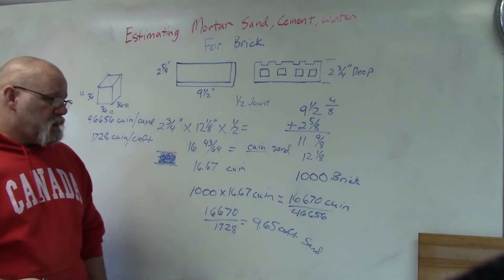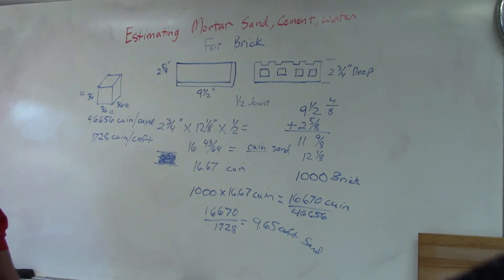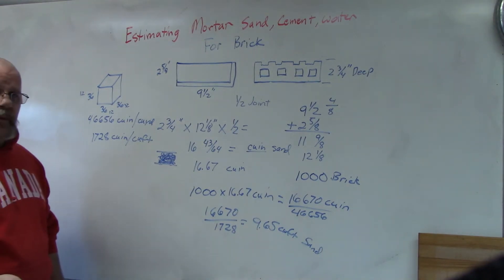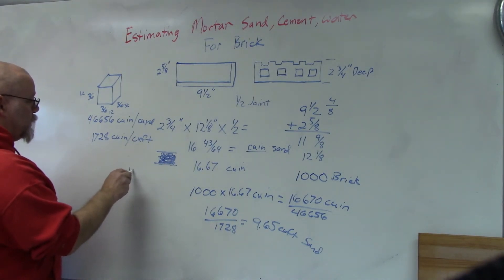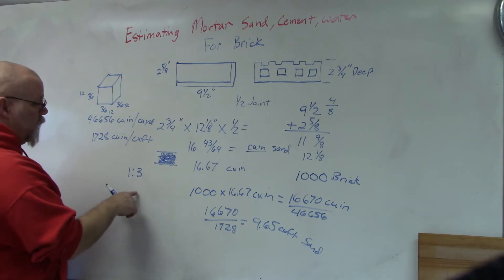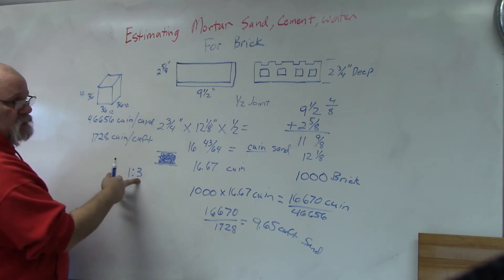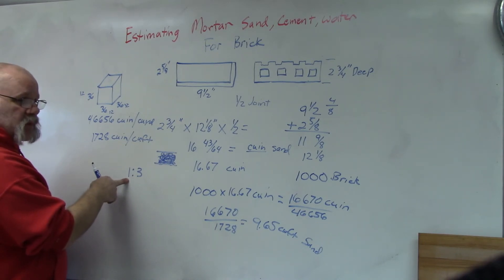Okay, now once you figured out how much sand you're going to use, you can easily find the amount of cement that you're going to use because they go in ratios. So for a load-bearing wall, if my brick was going to be a load-bearing wall, I would probably mix it at a ratio of 1 to 3. So for every three scoops of sand I need one scoop of cement. For every three cubic feet of sand I would need one cubic foot of cement.